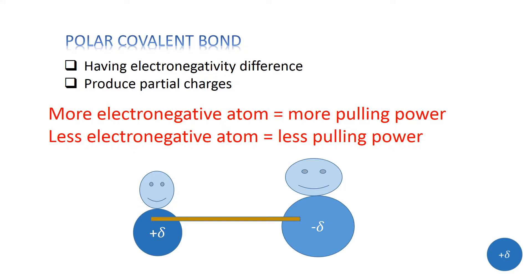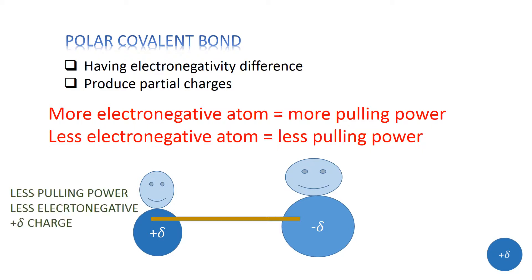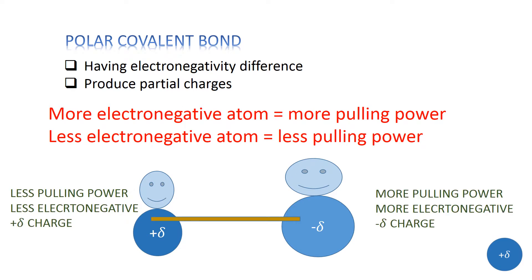Now look at the diagram. There are two charges — partial positive and partial negative. The partial negative charge is bigger compared to the partial positive charge, so it must have greater pulling power, meaning it is more electronegative. The partial positive charge is smaller or weaker. In a competition between these two charges, the partial negative charge will win whereas the partial positive charge will lose.